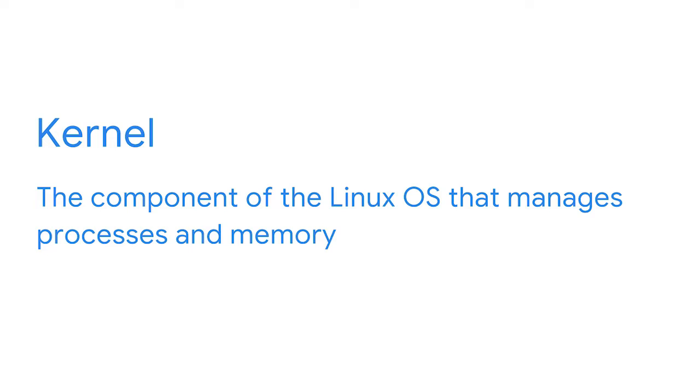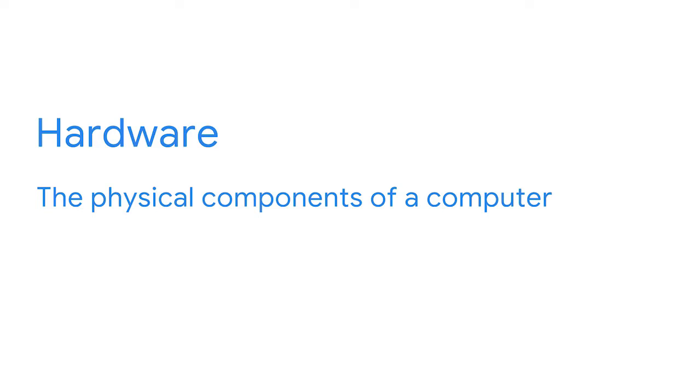That brings us to the kernel. The kernel is a component of the Linux OS that manages processes and memory. The kernel communicates with the hardware to execute the commands sent by the shell. The kernel uses drivers to enable applications to execute tasks. The Linux kernel helps ensure that the system allocates resources more efficiently and makes the system work faster. Finally, the last component of the architecture is the hardware — the physical components of a computer, like the CPU, mouse, and keyboard.